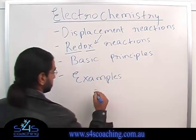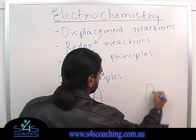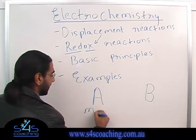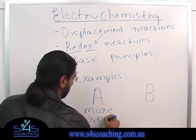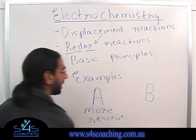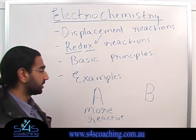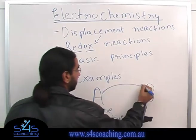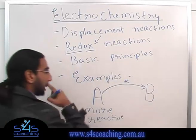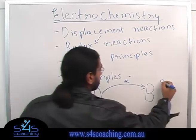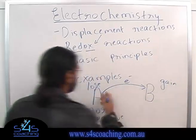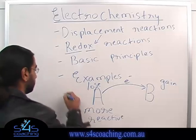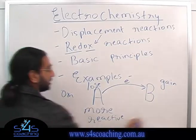Let's say I have two metals: metal A and metal B. Now let's say metal A is more reactive. Metals react by losing electrons, so if metal A is more reactive, then metal A will lose electrons — it will give an electron away. So metal A loses the electron and metal B gains the electron. So this is oxidation and this is reduction.